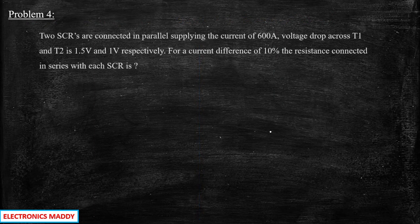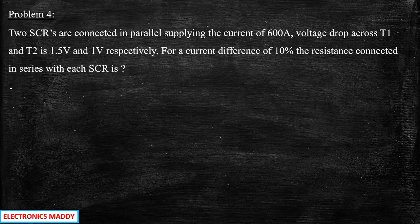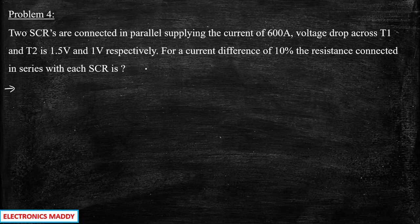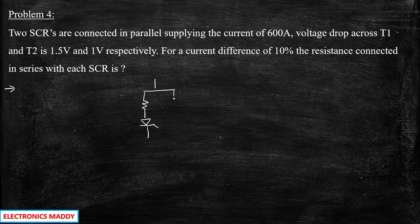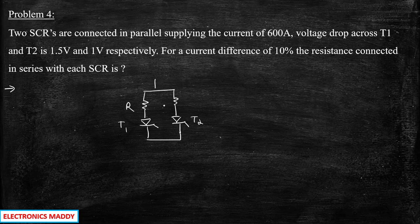Now let us solve one interesting problem with respect to parallel connection. Two SCRs are connected in parallel supplying a current of 600 amperes. Voltage drop across T1 and T2 is 1.5 and 1 volt respectively. For a current difference of 10%, find the resistance connected in series with each SCR. Basically there are two SCRs T1 and T2 connected in parallel, each with a resistor R in series.